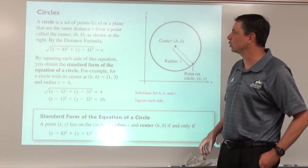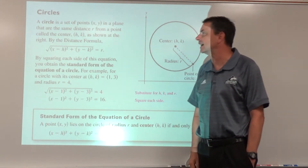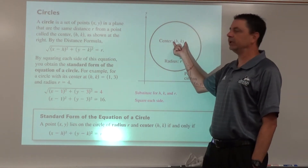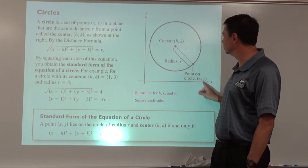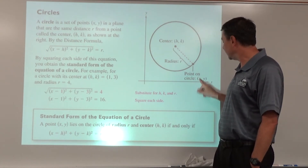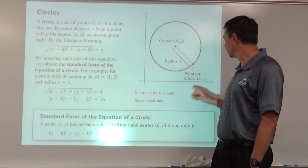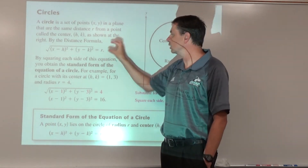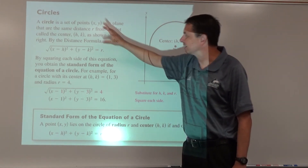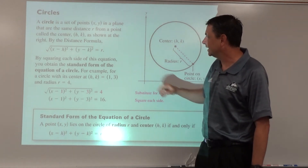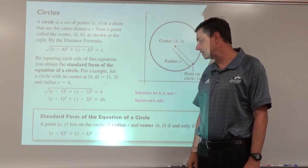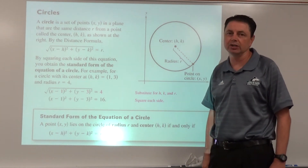Our next topic is equations of circles, which comes from the distance formula. With the center at (h, k) and a point on the circle, we use the distance formula: √[(x - h)² + (y - k)²] = r, where r is the radius. Squaring both sides gives us the standard form equation of a circle: (x - h)² + (y - k)² = r².